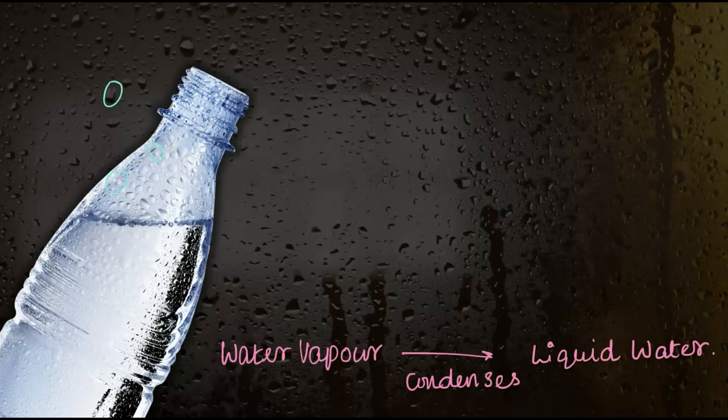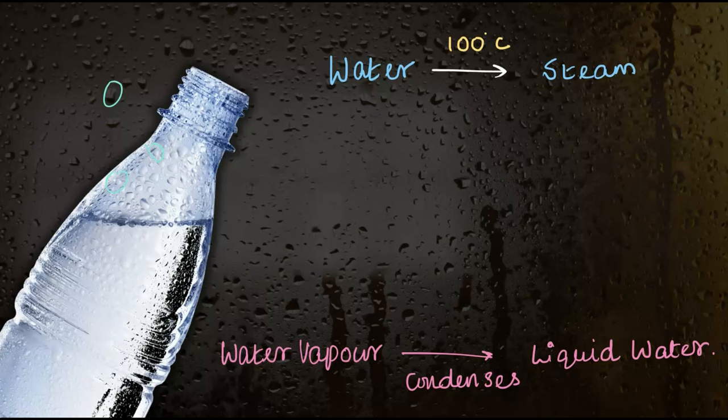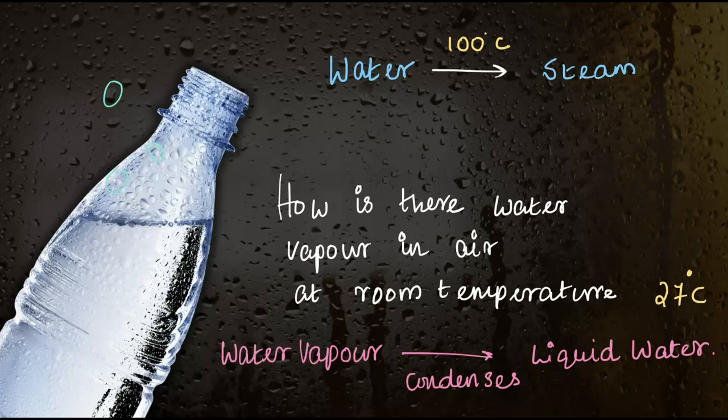We've learned that water boils at 100°C, which means liquid water turns into gas — water vapor or steam — at that temperature. But here is a big question: if water vapor or steam is formed at 100°C, how is there water vapor in the air at room temperature, that is 27°C? Let's find out.